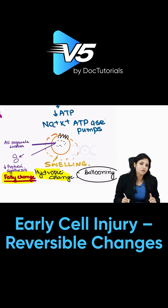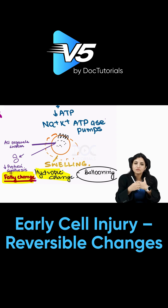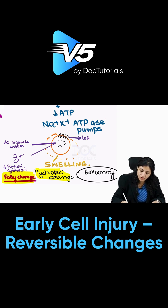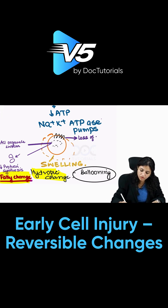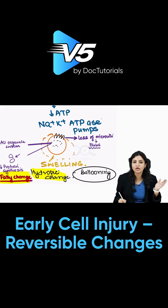Hydropic change and fatty change are very important features of reversible cell injury seen under the microscope. Now, what about outside the cell? When the cell is swelling, the microvilli on top will also get lost due to swelling — there will be loss of microvilli. Sometimes so much water comes inside the cell that it leads to bleb formation. Under electron microscopy, the microvilli are lost and blebs are formed — that is a very classical feature of reversible cell injury.